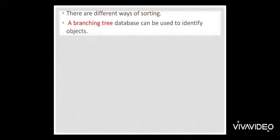So, there are different ways of sorting. We have another way to sort materials. It's branching tree. It's database can be used to identify objects.